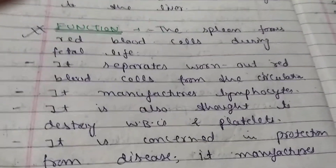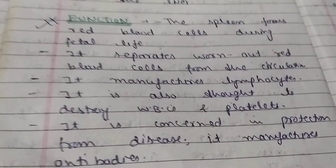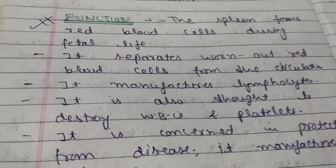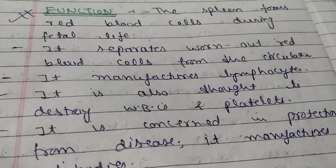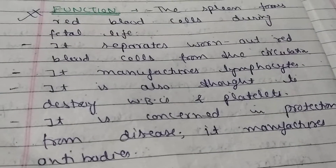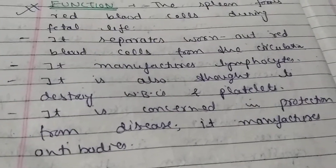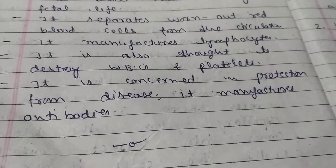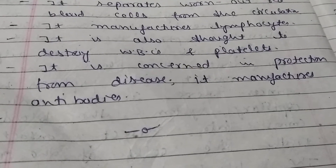The functions of the spleen: The spleen forms red blood cells during fetal life. It separates worn-out RBCs from the circulation, as RBCs are destroyed after 120 days. It manufactures lymphocytes. It is also thought to destroy WBCs and platelets.